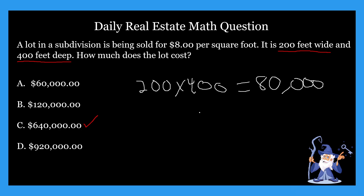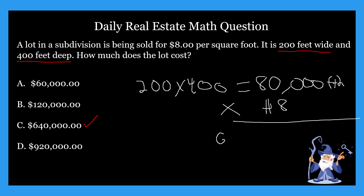So we're taking the feet wide and the feet deep to find the total square footage — 80,000 square feet. Then all we have to do is take that $8 per square foot and multiply. We take 80,000 and multiply by $8, which gives us $640,000. That is our total cost of the lot.